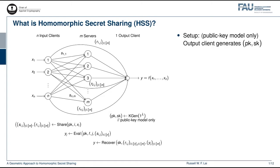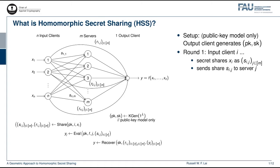A two-round MPC protocol built from HSS involves the following phases. First, there is the setup phase, which happens in the public key model only, in which the output client generates a public key-secret key pair. Then, in the actual protocol, in round one, the input client I would secret share its input XI as Sij for J ranging from 1 to M for each server. It then sends the share Sij to server J.